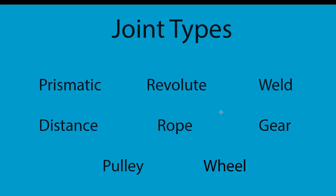Now we'll move on to the Revolute joint, which was demonstrated just a second ago. That again is kind of like a hinge type of joint. You can set parameters to have restrictions of angles. You can also motorize them and provide a set amount of torque that they're allowed to spin at and different kinds of things like that, and I'll cover all that when we get to that video.